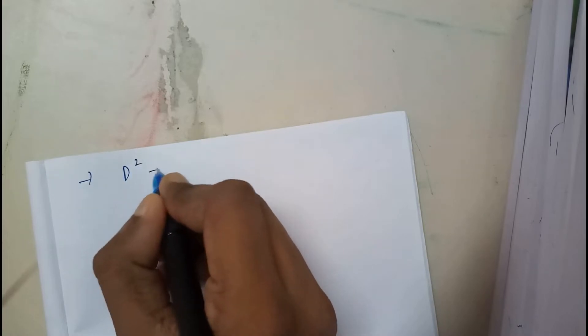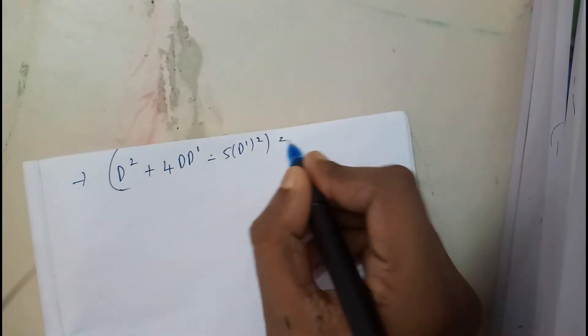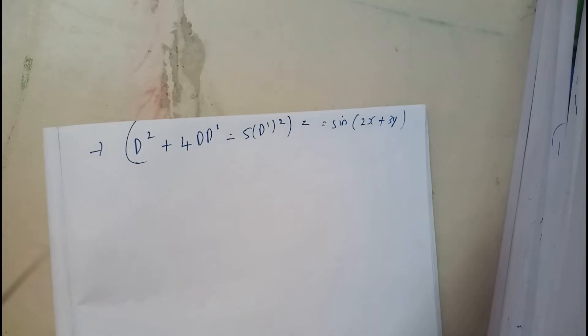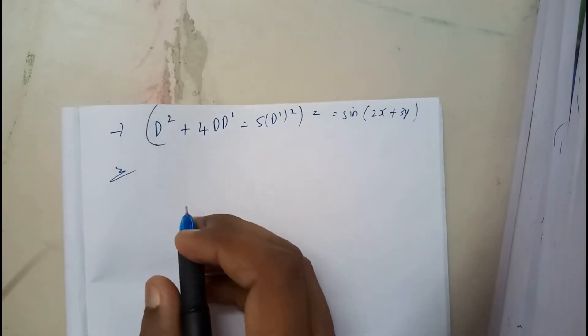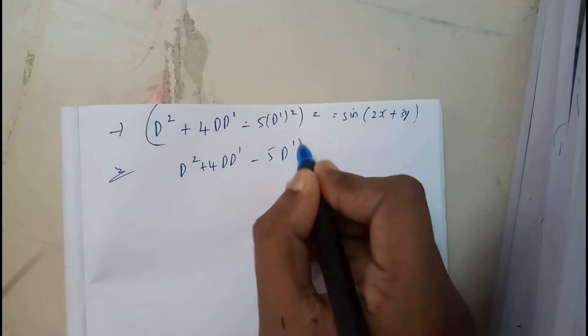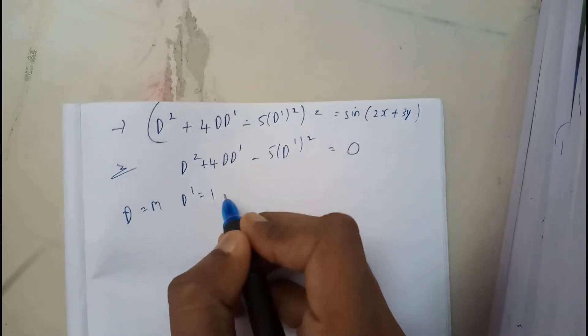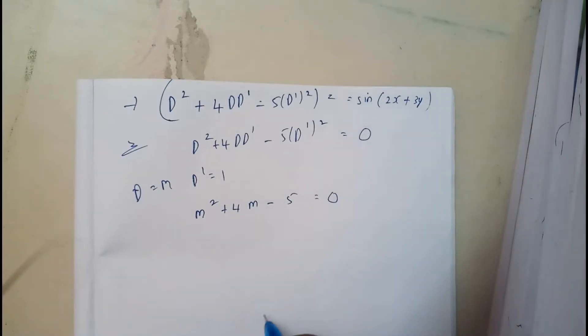Let's go through a problem. The question is: solve (D² + 4DD' − 5D'²)z = sin(2x + 3y). We will first find the complementary function. Setting D² + 4DD' − 5D'² = 0, the auxiliary equation with D = m and D' = 1 gives m² + 4m − 5 = 0.